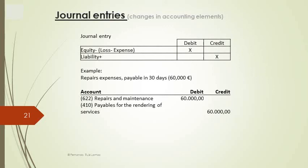But when at the time we recognize an expense the invoice is not yet due, the counterpart of the debit in the expense consists of recognizing a debt with the supplier. Here is an example of a debit in repairs and maintenance costs, together with a credit in a new liability, using the account that relates to this kind of expenses payable for the rendering of the service.